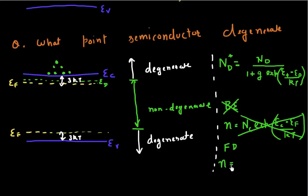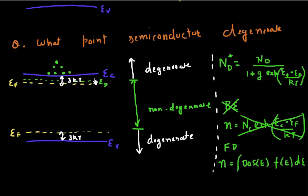The formula for the number of electrons related to the effective density of states was derived using Boltzmann-Einstein statistics, so I cannot use that simplified form. Instead, I'll have to go back to Fermi-Dirac statistics. I'll have to integrate the density of states and the position of my Fermi level, which gives me the probability of occupation. We cannot use Boltzmann-Einstein statistics because our Fermi level is very close to the conduction band.